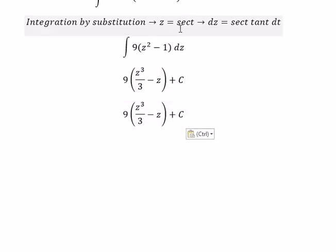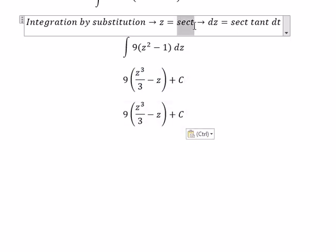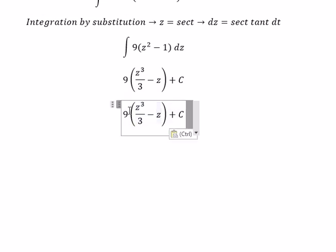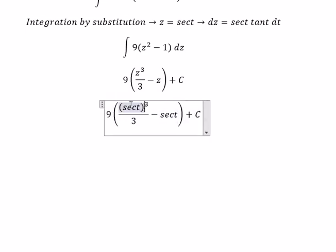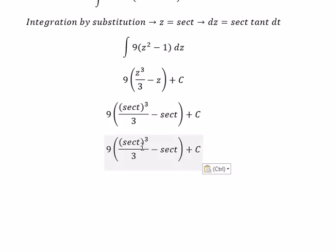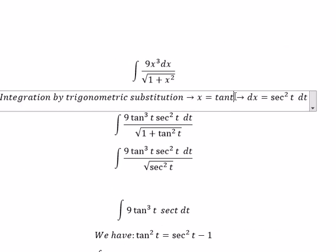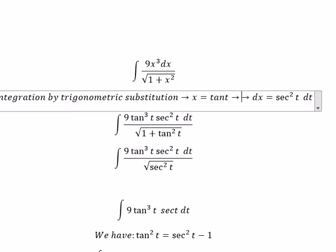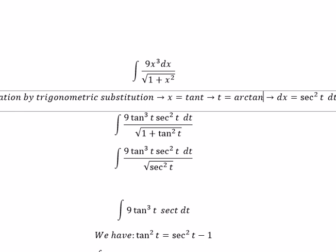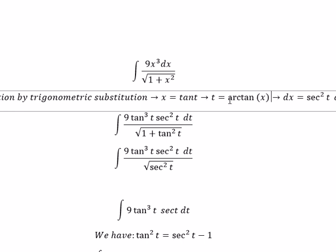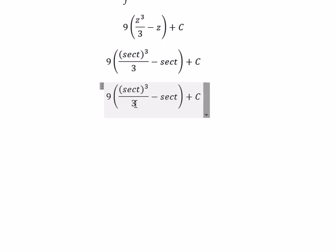We change z back to sec t, and then back-substitute sec t in terms of the original variable, putting this back into our expression to obtain the final answer.